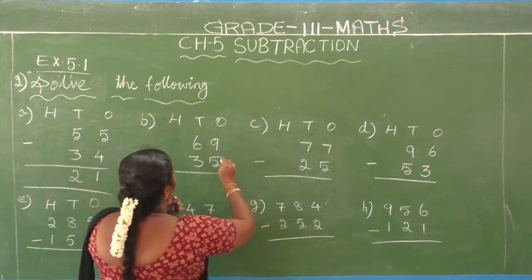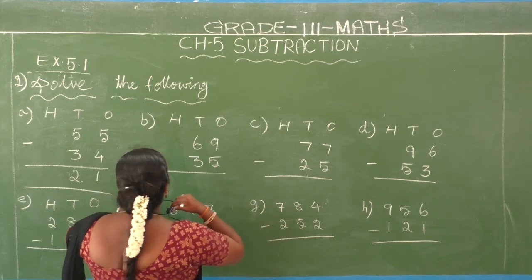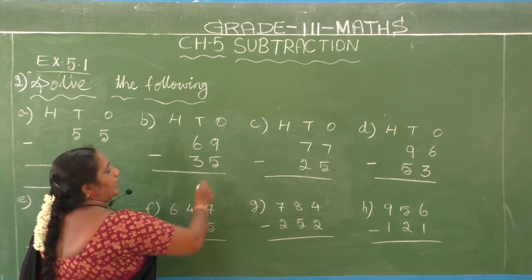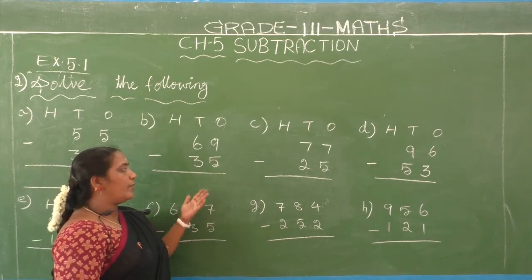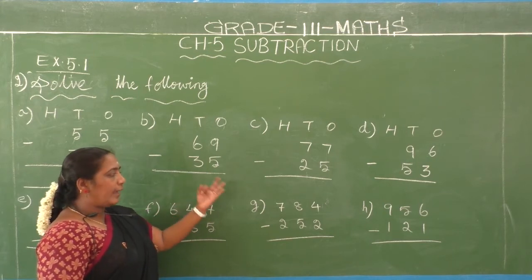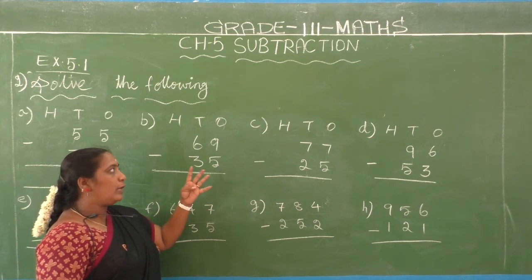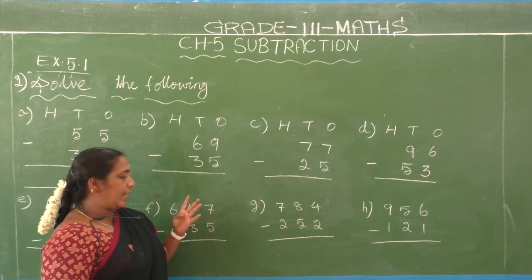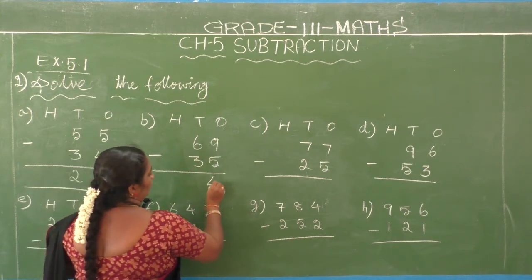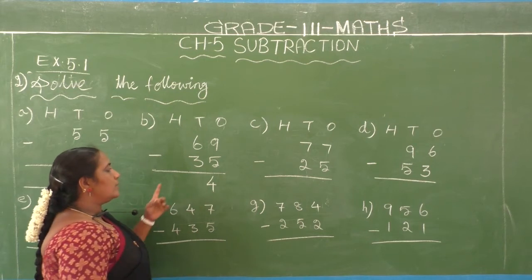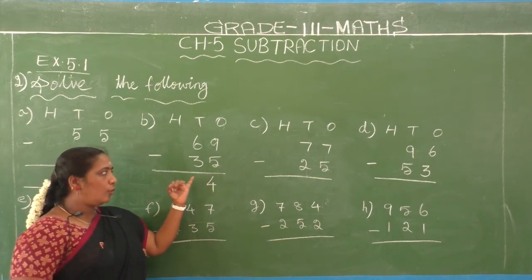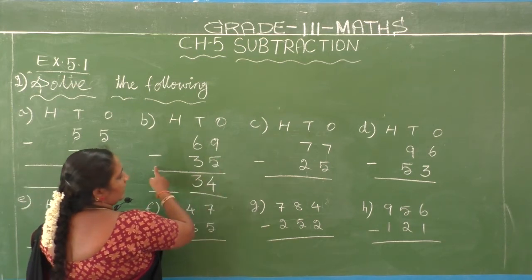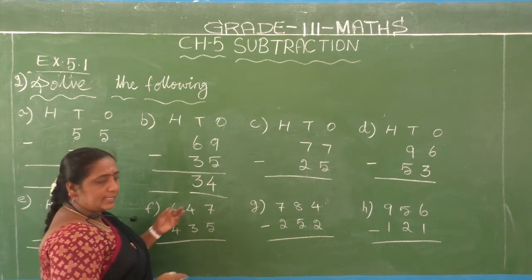B1: 69 minus 35. Ones place — second number is 5: 5 after 6, 7, 8, 9. You have to leave fingers up to the first number only — first number is 9, stop at 9. Count: 1, 2, 3, 4. Answer is 4. Tens place — second number is 3: 3 after 4, 5, 6. Difference is 3. So 69 minus 35 equals 34.